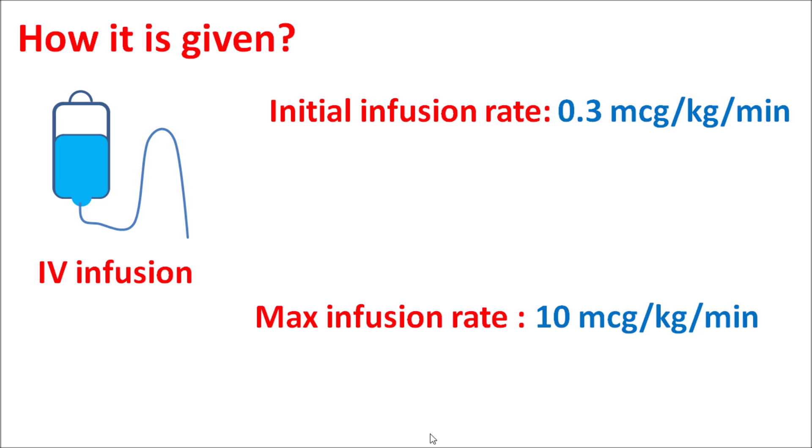In summary, sodium nitroprusside is both an arteriolar and venular vasodilator that acts peripherally by releasing nitric oxide to produce vasodilatation. This drug is particularly used for the treatment of hypertensive crisis in cardiovascular complications.